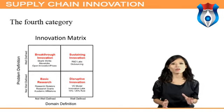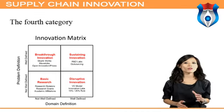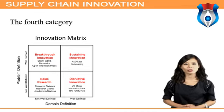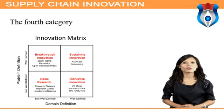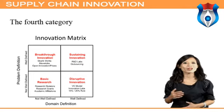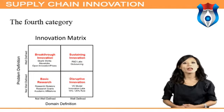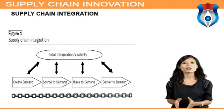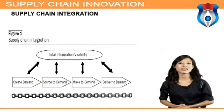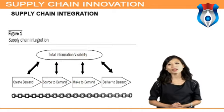The third category, disruptive innovations, completely changes market conditions and customer expectation. The fourth category, disruptive and radical innovation, is a combination of the second and third categories. These are large-scale disruptive innovations that become established in the market very fast and are very rare.